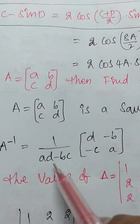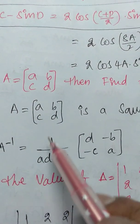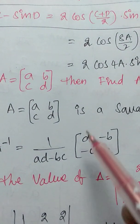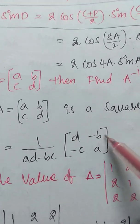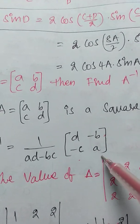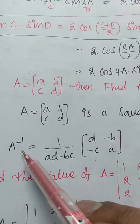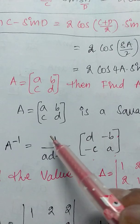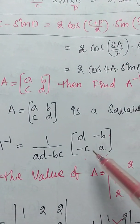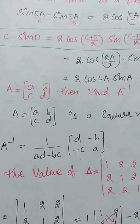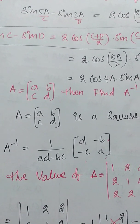A inverse is equal to 1 by determinant of A into adjoint of A. The adjoint of A is [d, -b; -c, a]. Therefore, A inverse is equal to 1 by (ad minus bc) into [d, -b; -c, a]. This is the inverse of the square matrix of order 2 by 2.